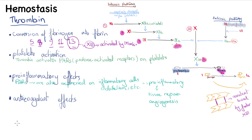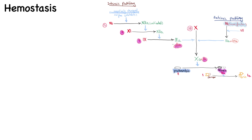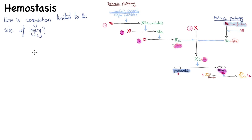Thrombin's anticoagulant effect is interesting: once thrombin reaches intact, uninjured endothelium, it switches from a pro-coagulant to an anticoagulant. This prevents the extension of clot formation beyond the site of injury. Clot formation must be limited to a certain necessary degree — so what factors limit coagulation?